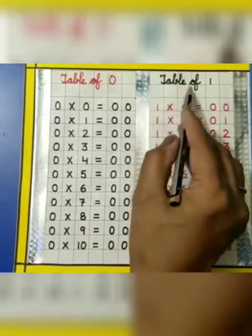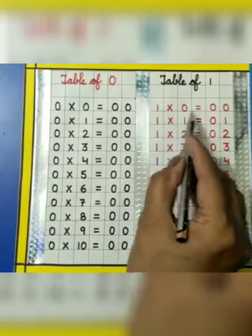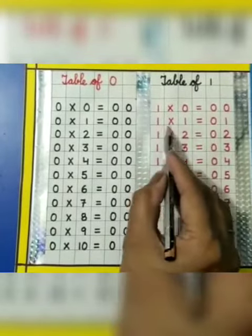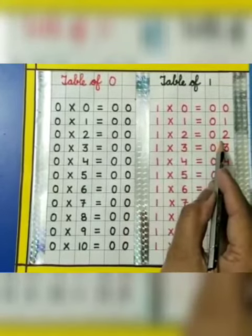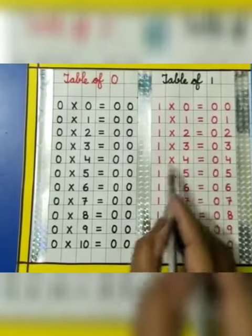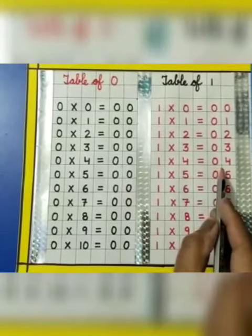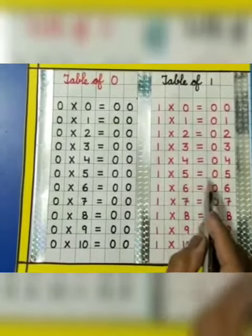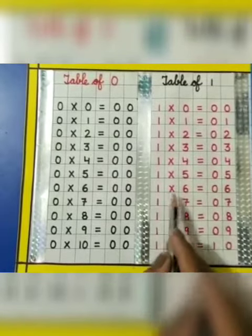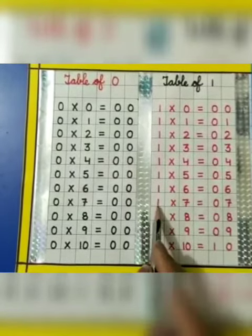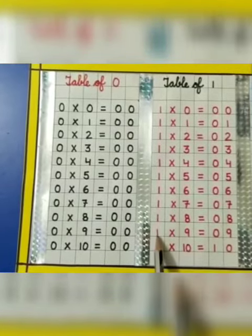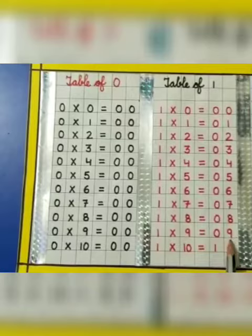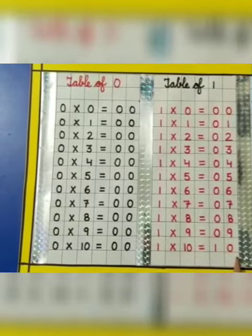Table of 1: 1 0s are 0, 1 1s are 1, 1 2s are 2, 1 3s are 3, 1 4s are 4, 1 5s are 5, 1 6s are 6, 1 7s are 7, 1 8s are 8, 1 9s are 9, 1 10s are 10. So learn your tables.